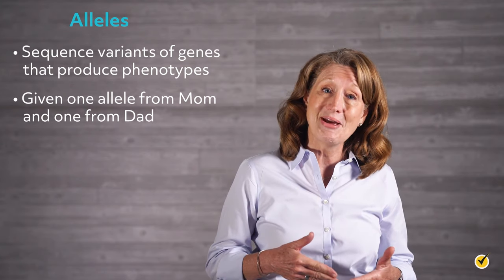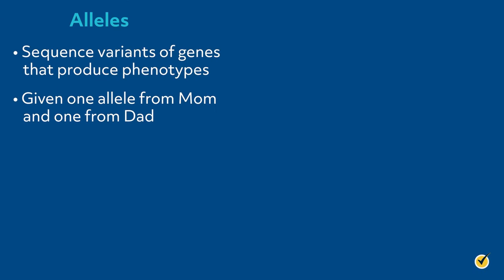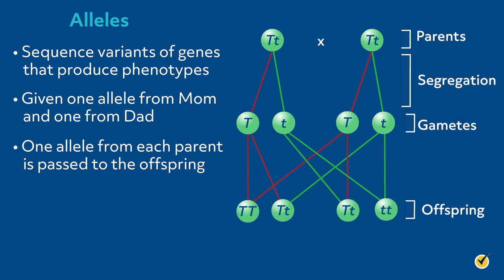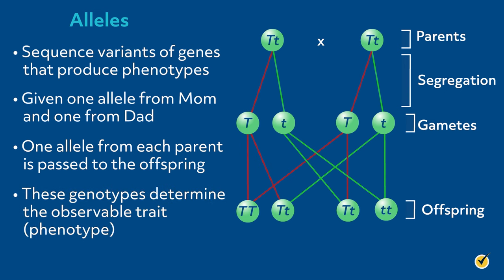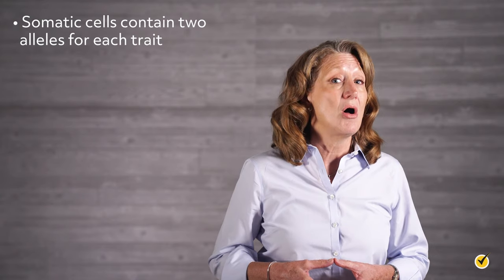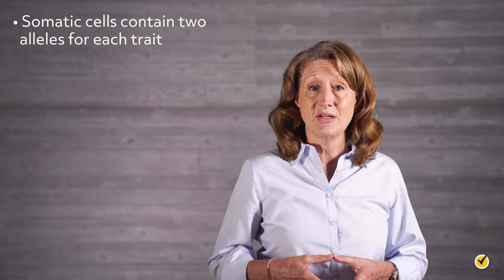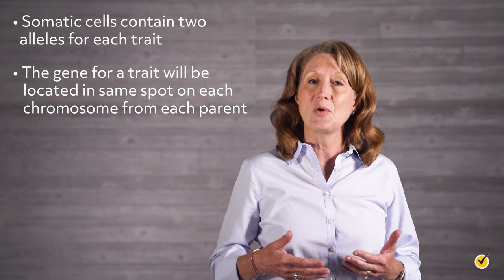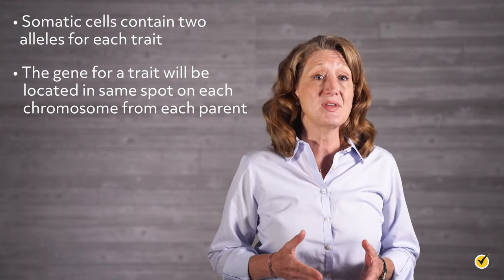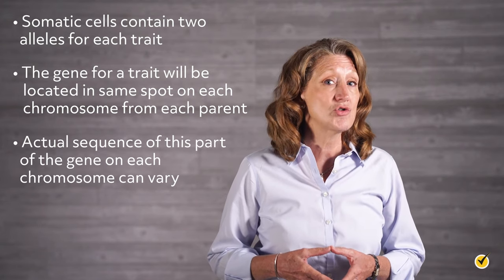We have one allele from mom and one allele from dad for each trait. Mendel's Law of Segregation states that parents' allele pairs separate randomly, and only one allele from each parent is passed to the offspring. The combination of these alleles — the genotype — determines the observable trait, or phenotype. For height, although many factors contribute, let's say a person is either tall or short. All somatic cells contain two alleles for each trait, one on each chromosome. The gene for height is located in the same spot on each chromosome from mom and dad, but the sequence can vary — this varied sequence is an allele.